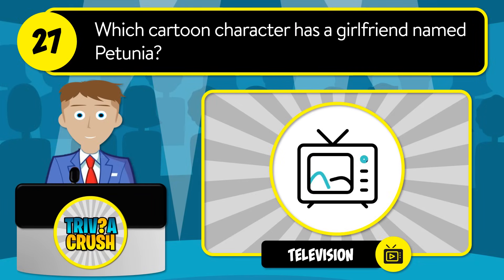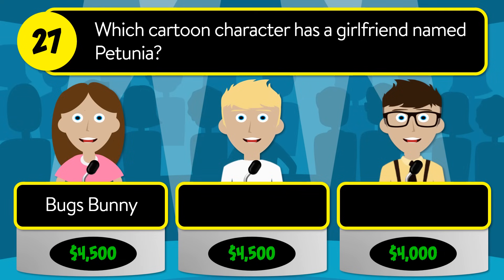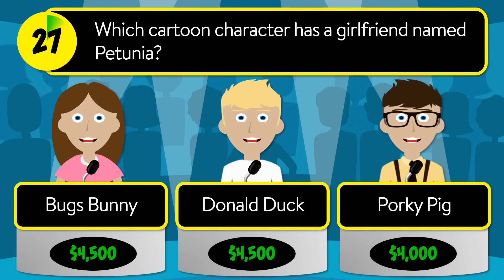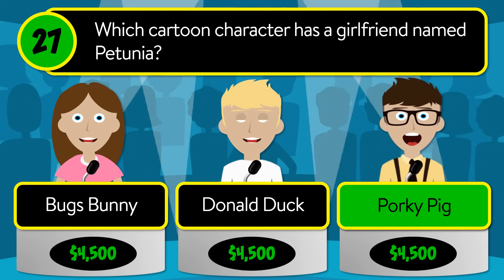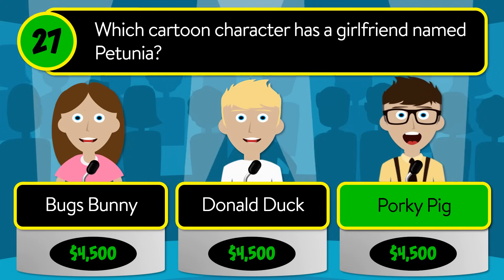Question number twenty-seven: which cartoon character has a girlfriend named Petunia? Is it Bugs Bunny, Donald Duck, or Porky Pig? The correct answer is Porky Pig.